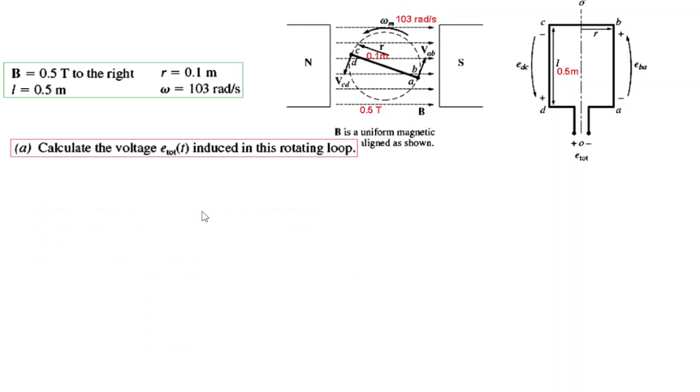Now the first question is calculate the voltage induced in the rotating loop. So I will not go into the derivation of the formulas. This is given in the book and if you have difficulty let me know so I can make another video. So I will straight away copy the formula. So the induced voltage is given by this formula and all the parameters are given here. So we will just plug in the values.